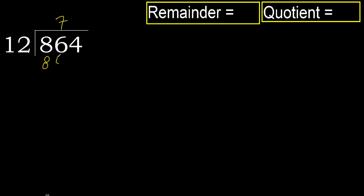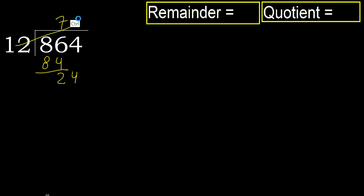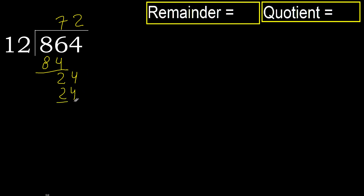Ok. Subtract 86 minus 84 equals 2. Next, bring down 4 to get 24. 12 multiplied by 2 equals 24, which is not greater.